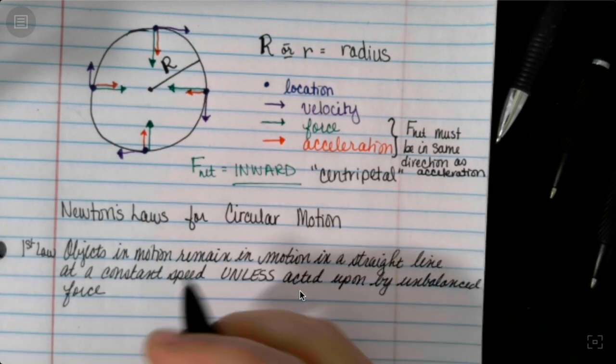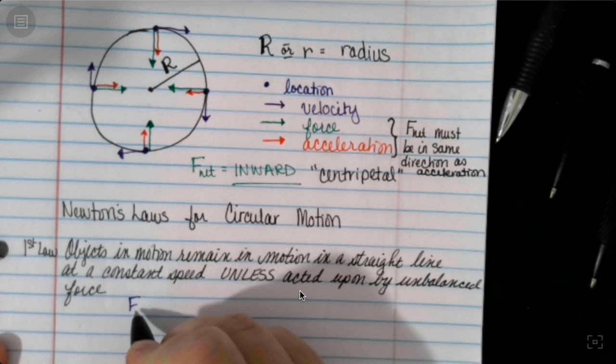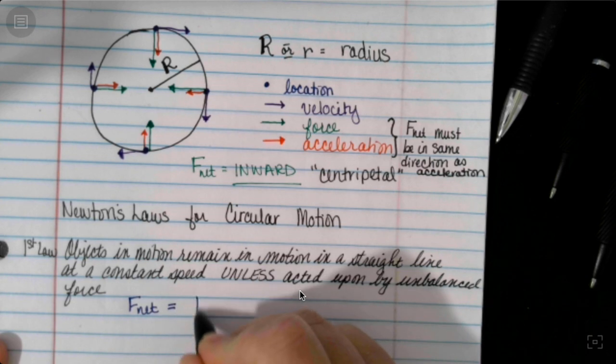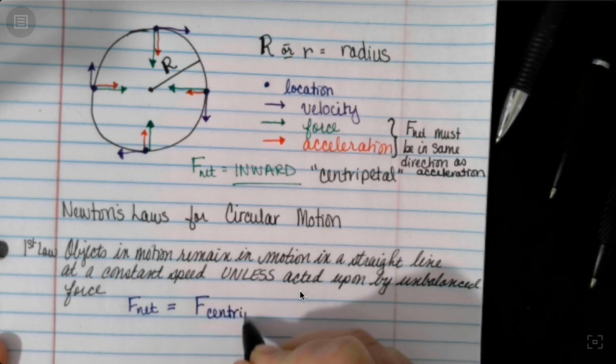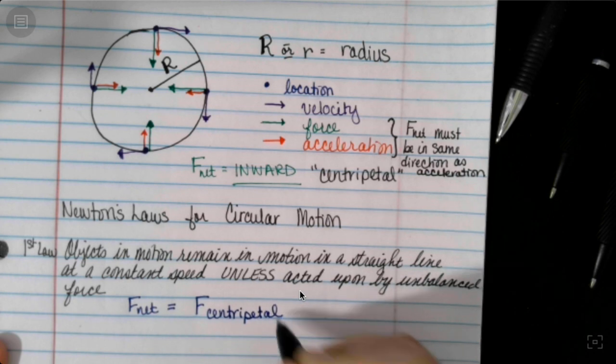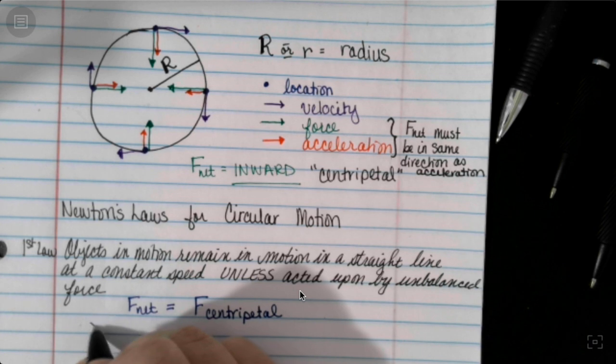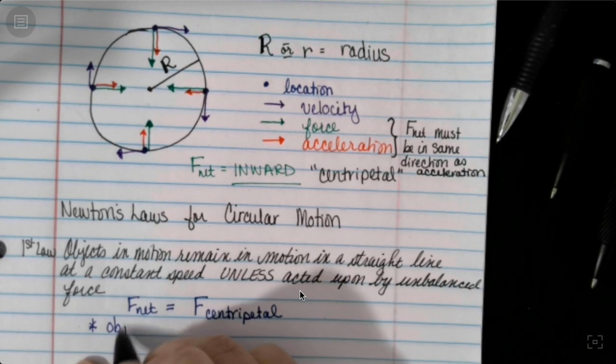So we know that there is a net force, which basically is an unbalanced force. It's going to be equal to the centripetal force or towards the center force, which pulls or pushes the object moving in a circle towards the center. So the object moving in a circle must be pushed towards the center.